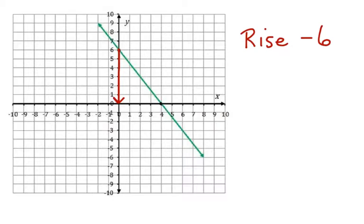Then we're going towards the positive here, and we're going positive 4. So the run is positive 4. Here's the slope. We can write it as negative 6 over 4, but now we need to simplify that.